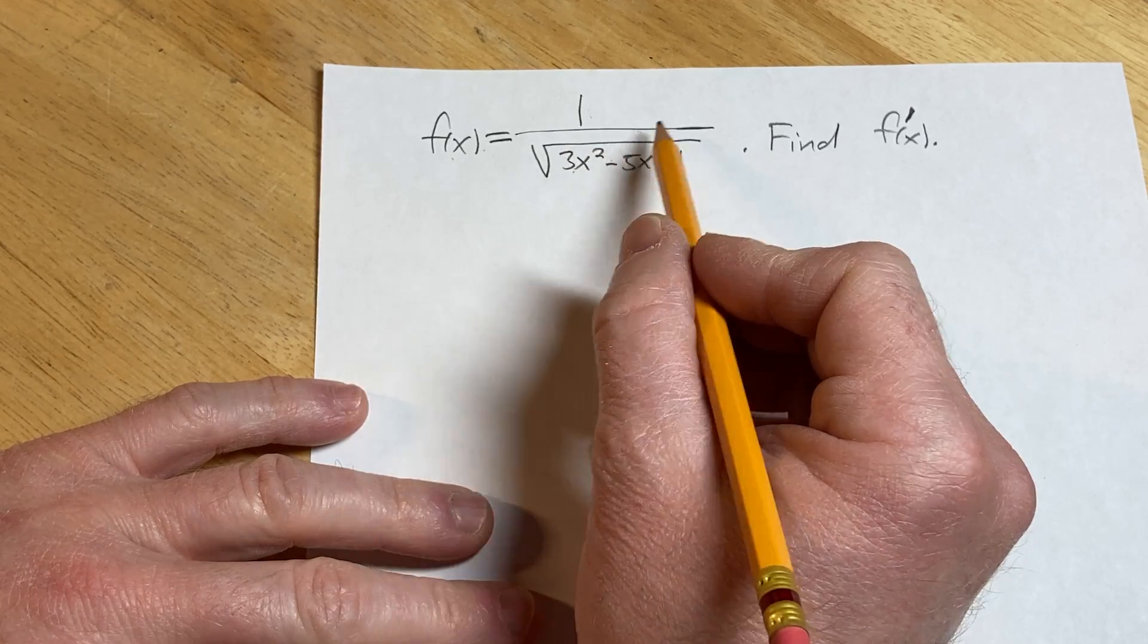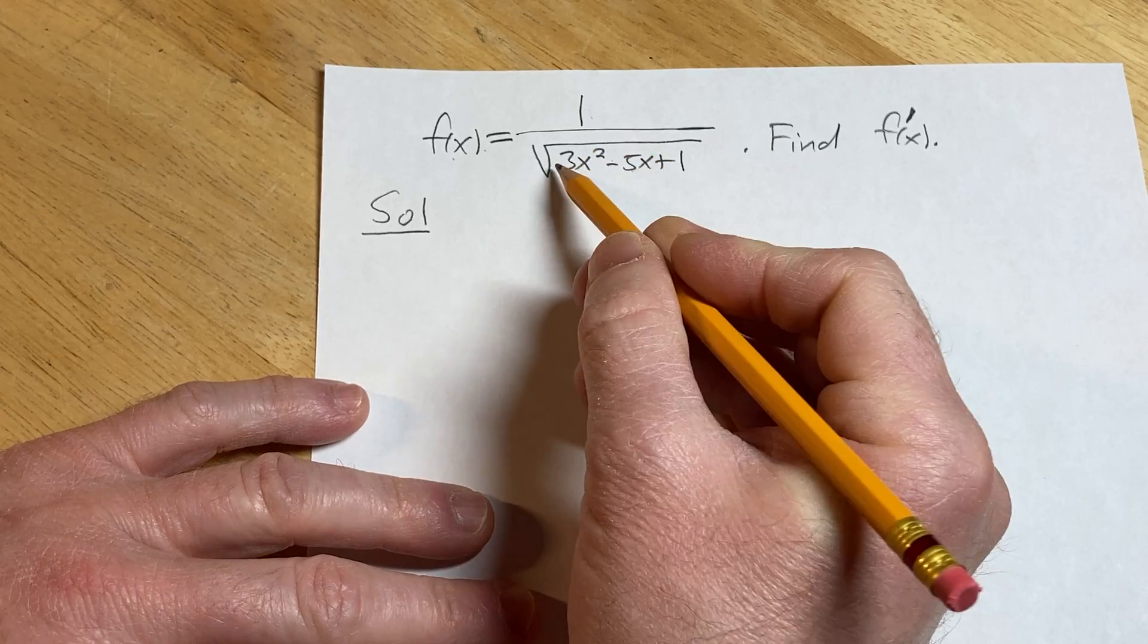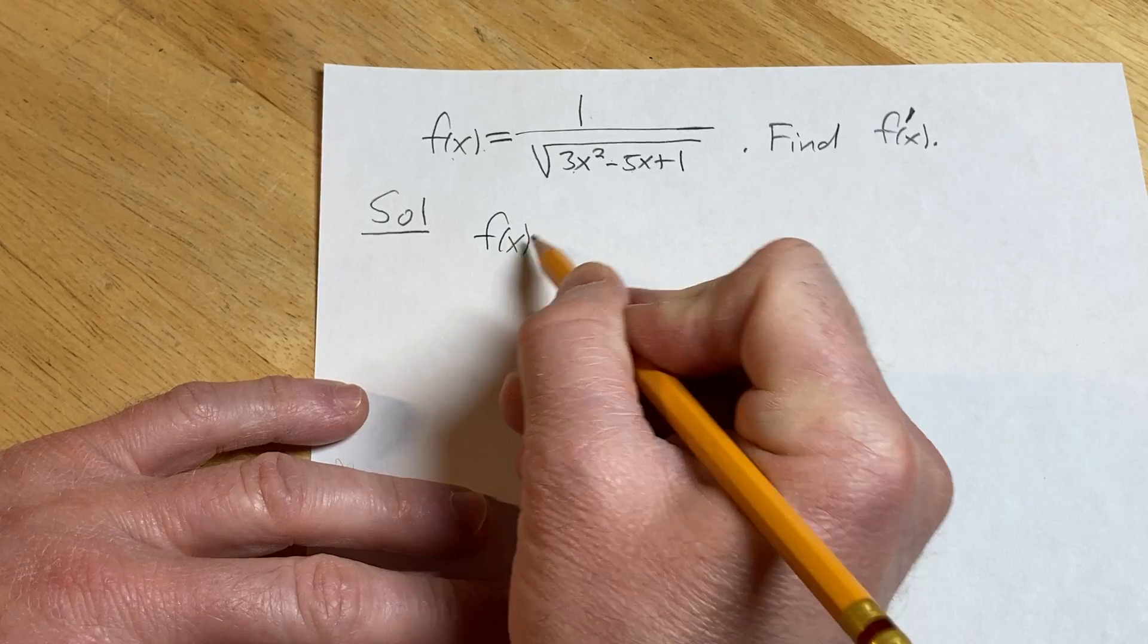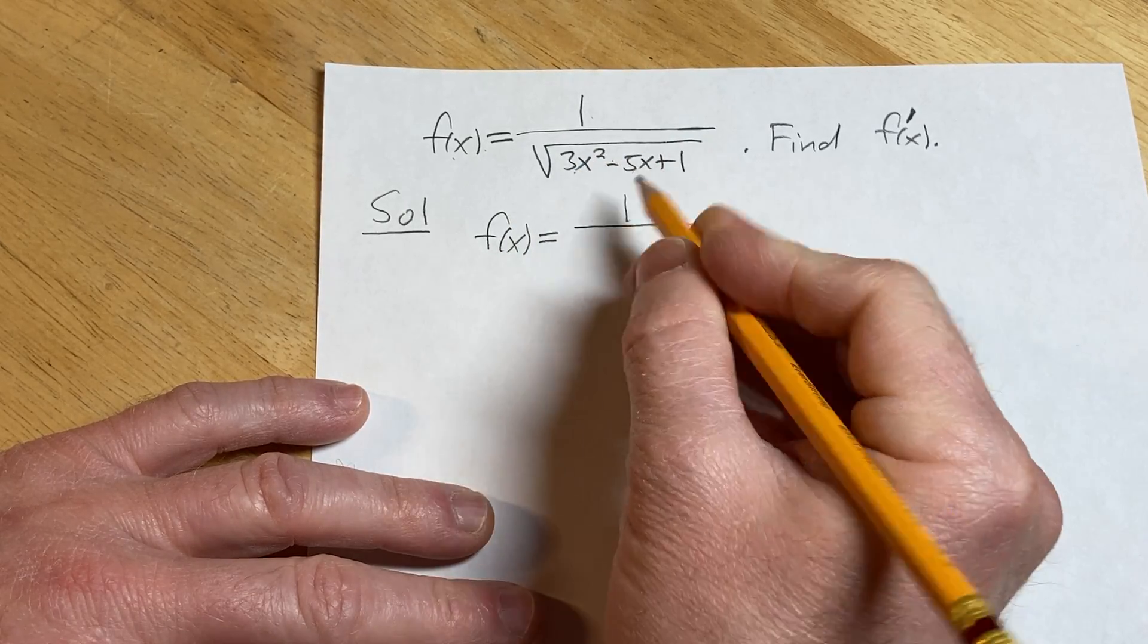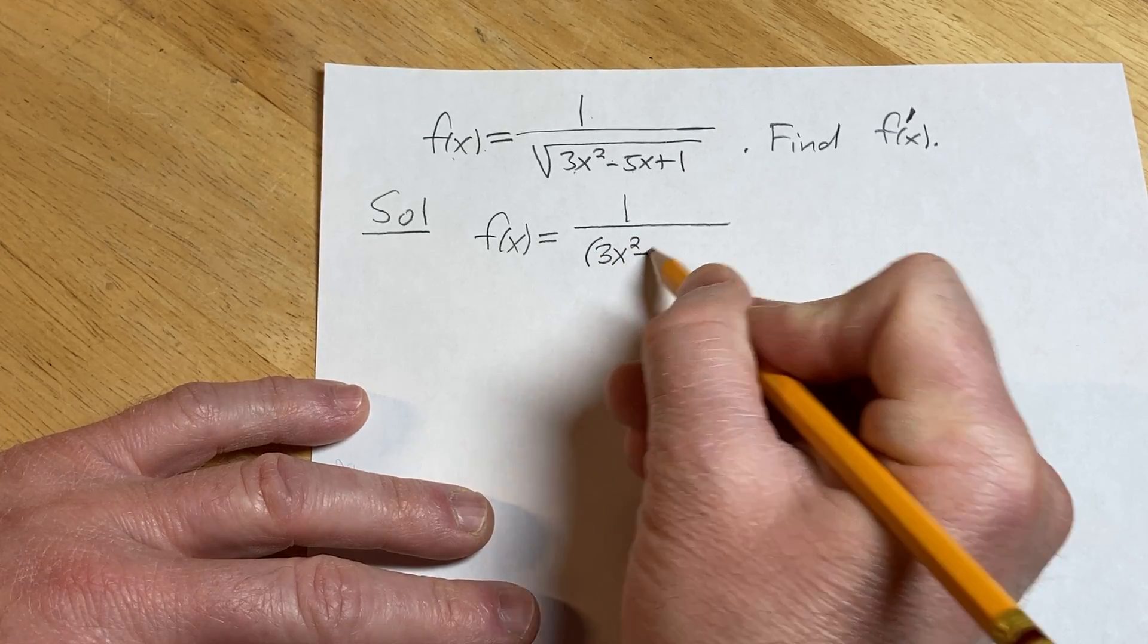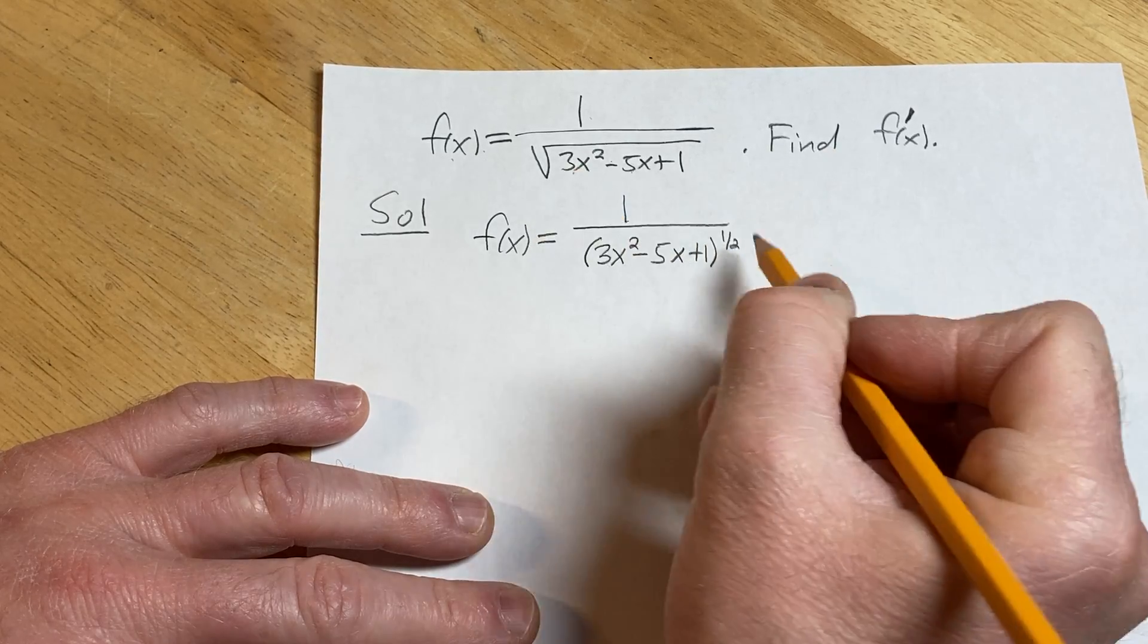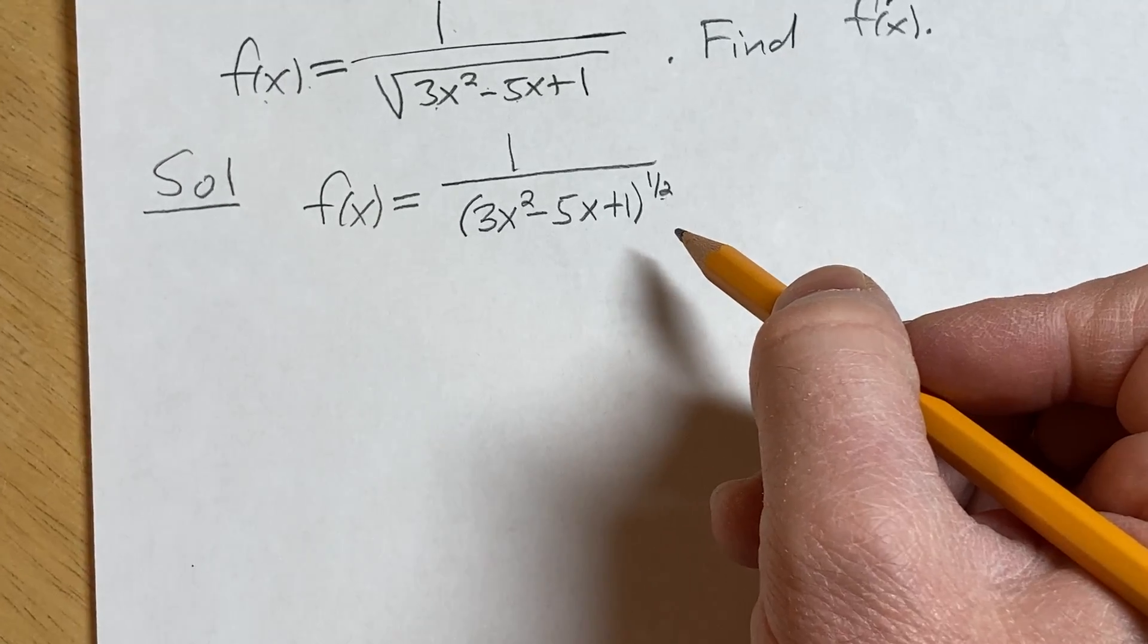To do this problem, we're going to do some rewriting initially. We're going to start by writing the square root function as a power function. So f of x is equal to 1 over, and we can write this as parentheses 3x squared minus 5x plus 1 to the 1 half. Whenever you have a square root, you can write it to a power where that power is 1 half.